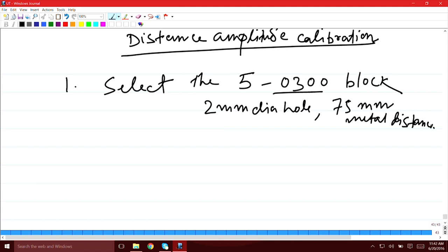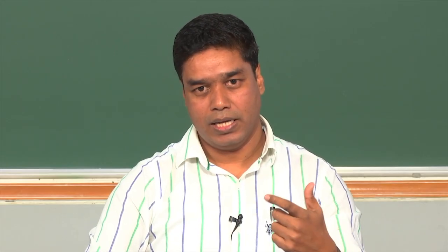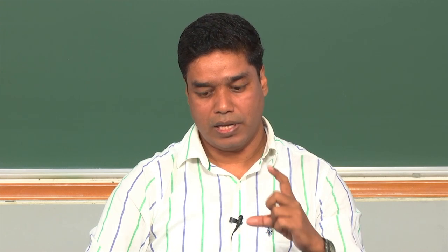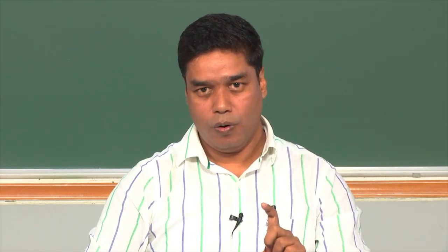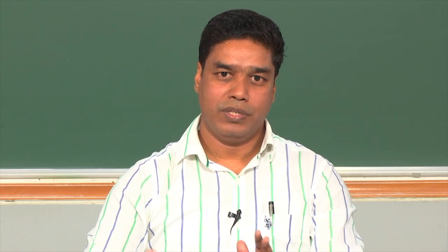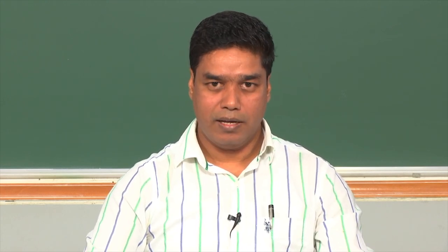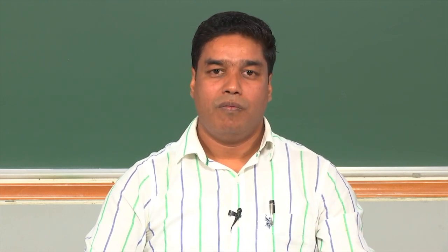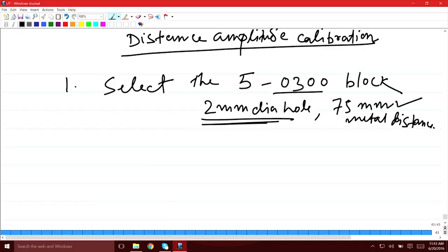We are going to keep this hole size constant and then vary the metal distance by selecting other blocks, collecting a number of data points in terms of distance. We collect the intensity of the echoes coming from these flat bottom holes as a function of metal distance, and with that data we can plot a curve used for calibrating the distance.